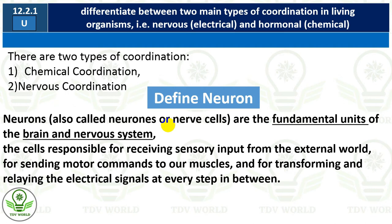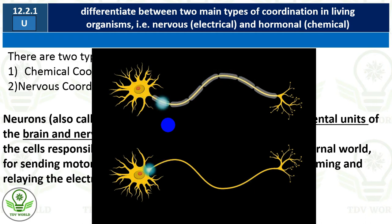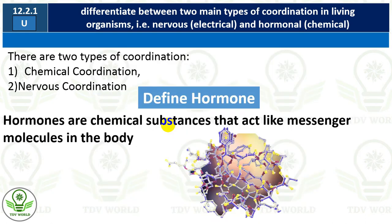For example, when you touch something, a signal reaches the brain, and the brain interprets whether it is soft or hard, and sends a message to the muscles of your hand. All this interpretation happens inside the brain. Now, what is a hormone? Hormones are chemical substances that act like messenger molecules in the body.